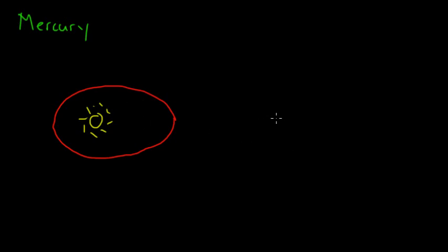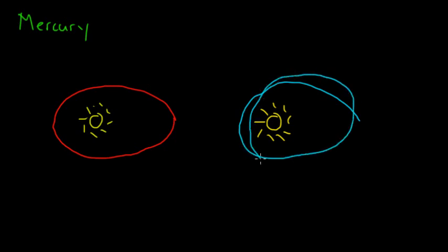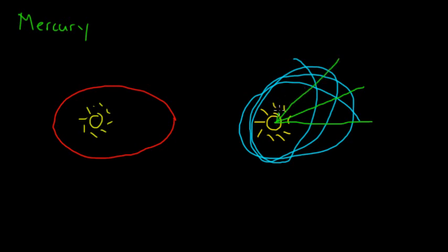But according to general relativity, if I have the Sun here and I trace out the path of Mercury, the point where Mercury is farthest away from the Sun will precess around the Sun. This is the direction where Mercury is farthest away, then this is the direction where Mercury is farthest away, and so on. Instead of the Newtonian picture where it stays at the same place, this position of the perihelion, which just means farthest away point, precesses.